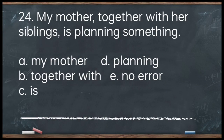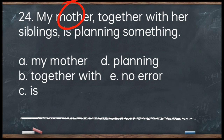Number 24. My mother, together with her siblings, is planning something. A. My mother. B. Together with. C. Is. D. Planning. E. No error. The answer is letter E — no error. Although 'siblings' is plural, 'mother' is the subject and it should agree with the verb. You just focus on the subject, not the complements: my mother is planning something.